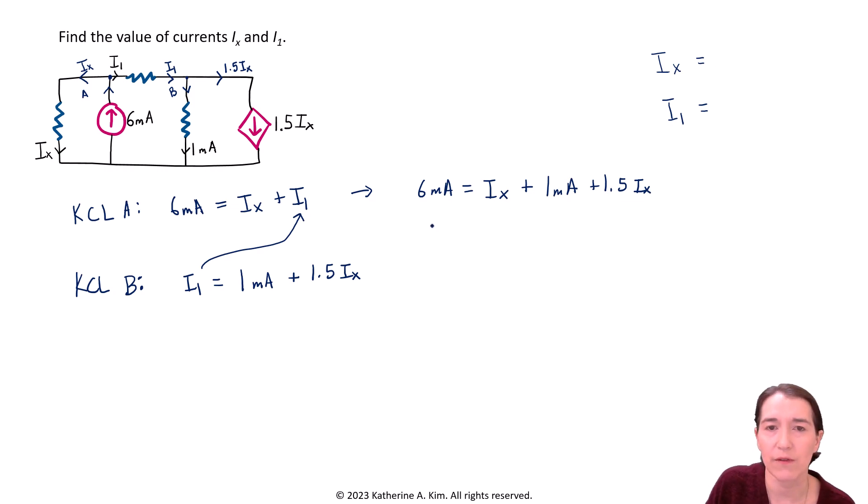Move minus 1 milliamp, we're going to have 5 milliamps here. And we're going to have 1 plus 1.5, which is 2.5 Ix. And this is just a scalar, so there's no units here. We're going to divide by 2.5. Now we're going to get Ix is equal to just 2, 2 milliamps.